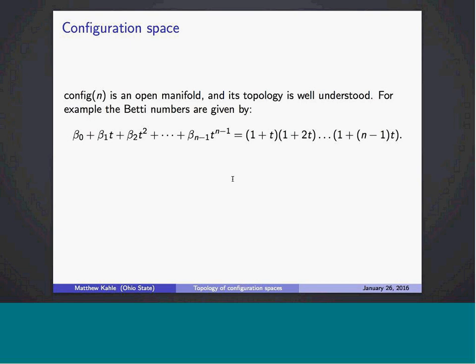The Poincaré polynomial encodes the Betti numbers as coefficients of powers of t. For n equals 2 — just two points in the plane — the Poincaré polynomial is 1 + t. You can translate so the first point is at the origin; then the second point can be anywhere except the origin, giving the punctured plane, which is homotopy equivalent to a circle. The Betti numbers of the circle are 1 in degree 0 and 1 in degree 1.